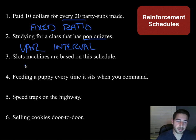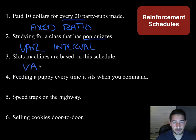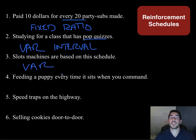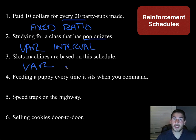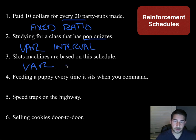Slot machines are based on this schedule. Do you know when you're going to win? Nope — so it's variable. Is your behavior going to affect whether you win? Yes. You put a quarter in and pull the slot down. If you don't put a quarter in, you can't win. You have to do something to get it. So it's variable ratio.